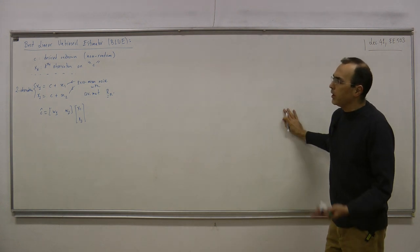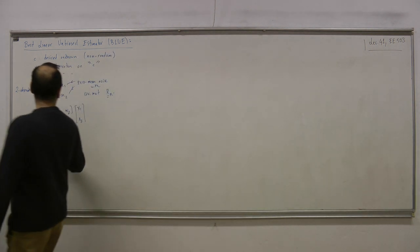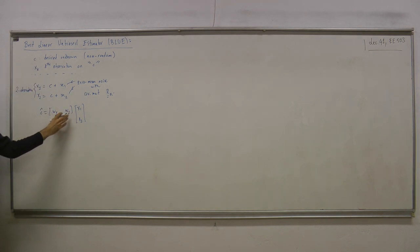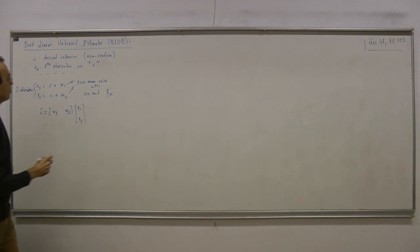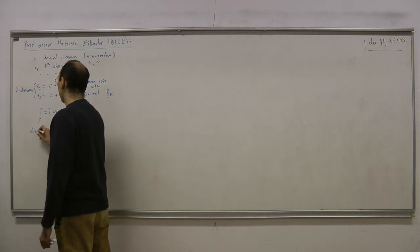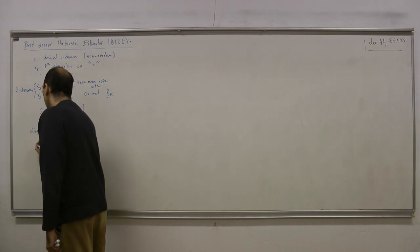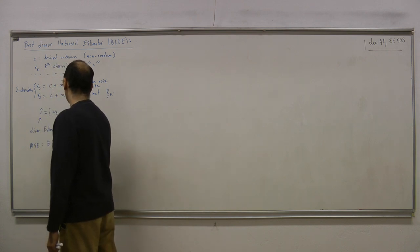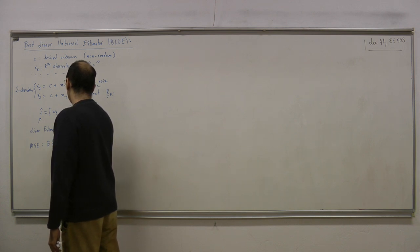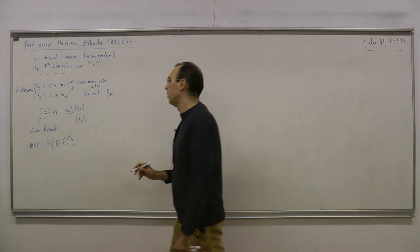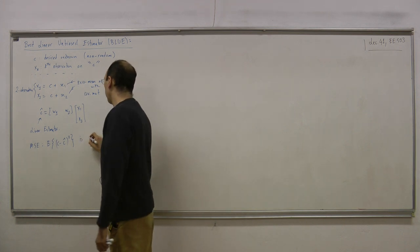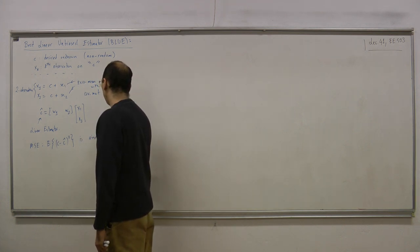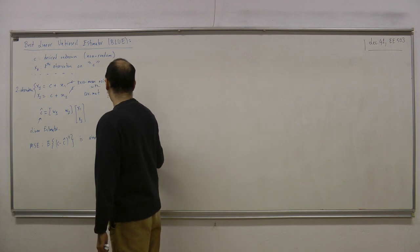The question is: what should the weights W1 and W2 be when computing this linear combination, so that we have a good estimate? The criteria is mean square error — E[(C - Ĉ)²] — aimed to be minimized.